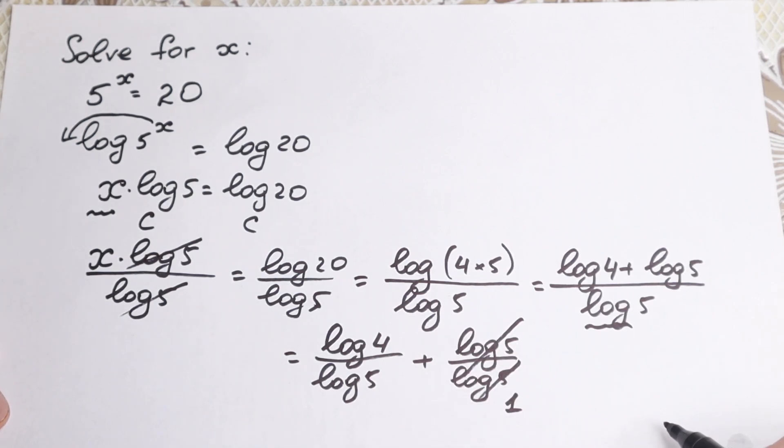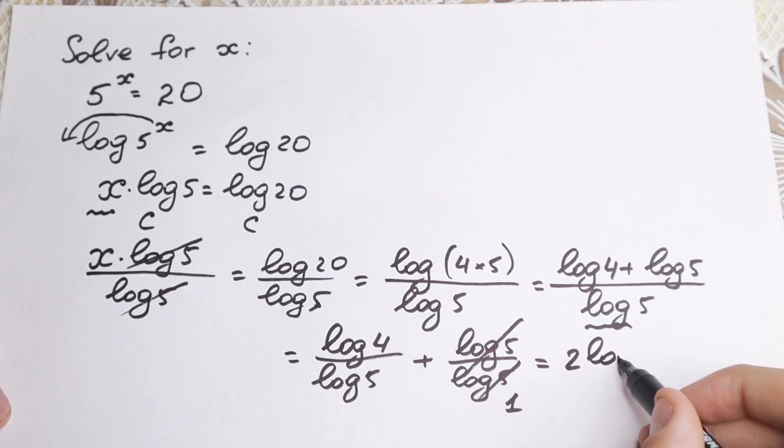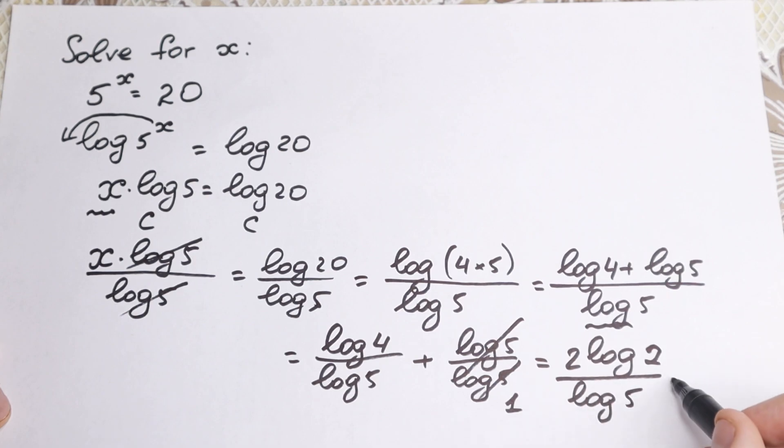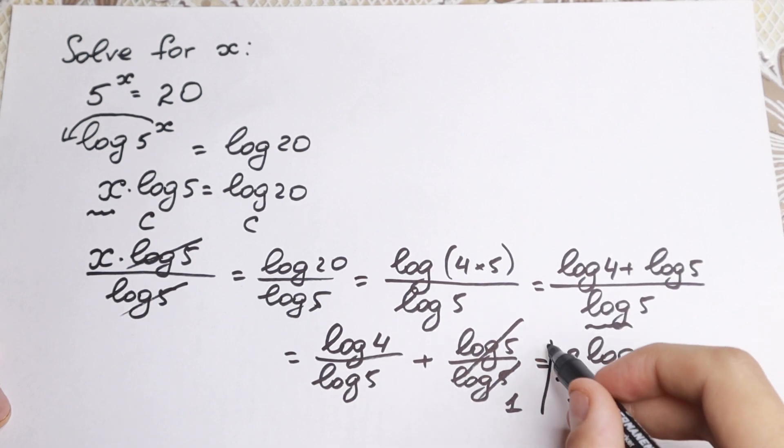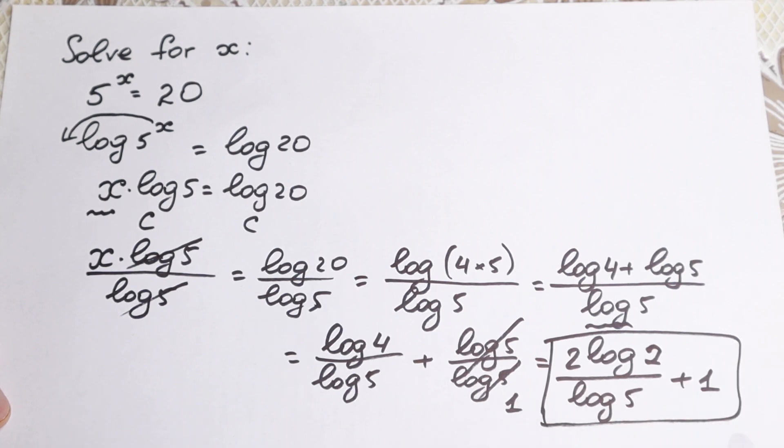And right here, this looks like the final answer, but we can write it as 2 squared, and this square goes right here. So final answer 2 log 2 over log 5 plus 1. So mathematically, this is the final answer, not this one, this is the final answer.